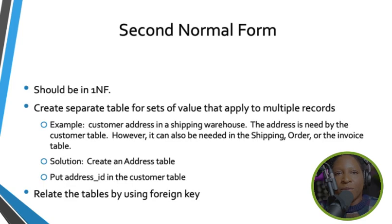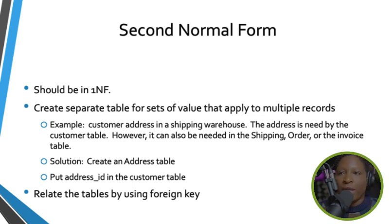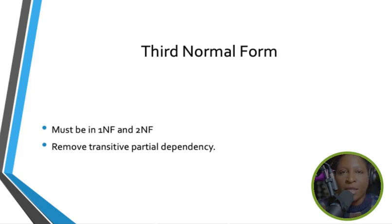In second normal form (2NF), your tables must already be in 1NF. Then you create separate tables for sets of values that apply to multiple records. For example, a customer address may be needed in both the customer table and the shipping or invoice table. Third normal form (3NF) involves removing transitive dependencies — removing any columns that depend on another non-key column in the same table.